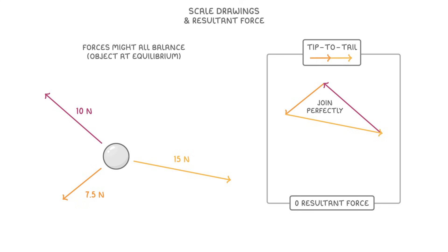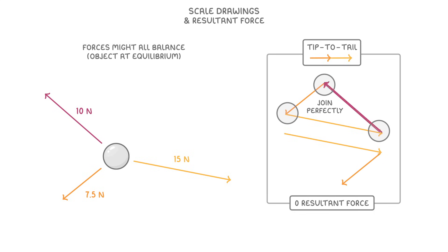Don't worry about arranging the arrows in any particular order though. As long as you put them all tip to tail, then you'll be fine. For example, we could have arranged them like this instead. They still form a perfect triangle, which means there's no resultant force.